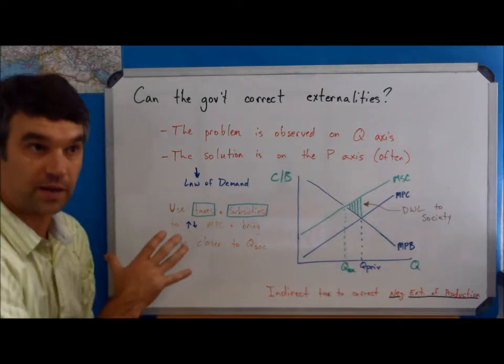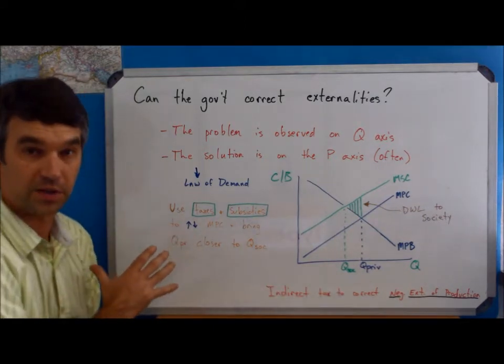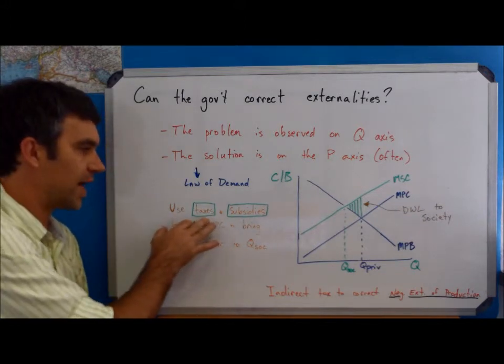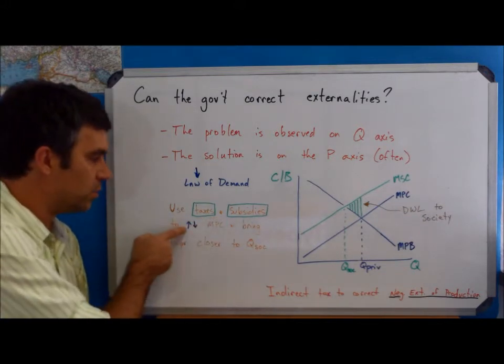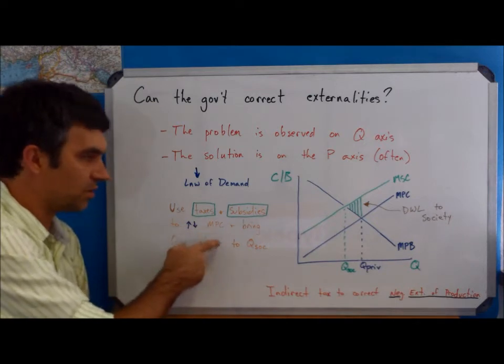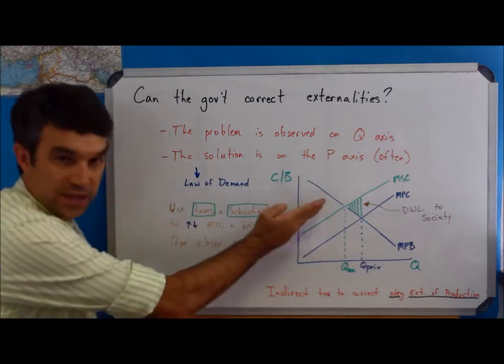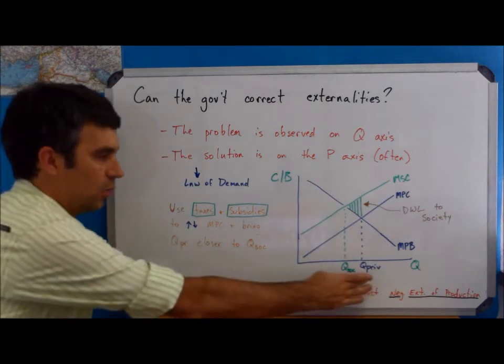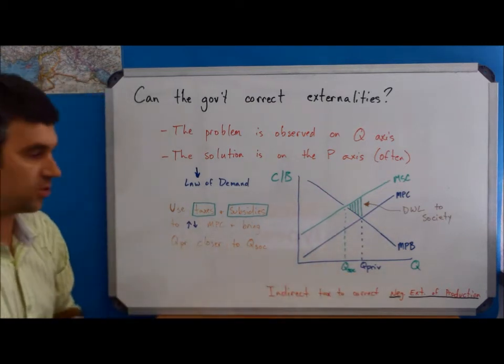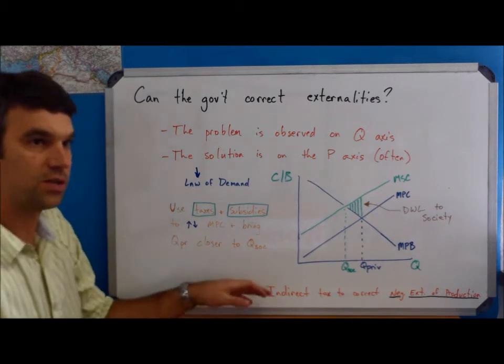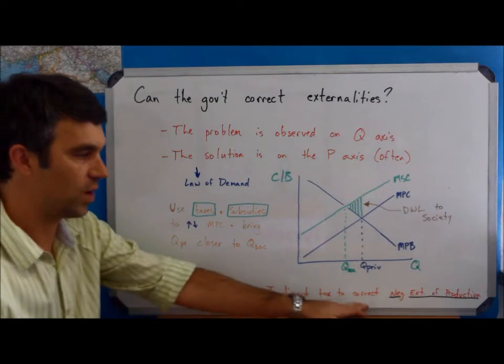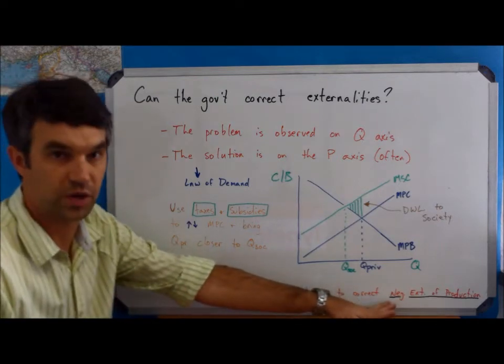Based on what we looked at the last part of the unit, government intervention, we said the government can use taxes and subsidies to move the MPC curve up or down, up with the tax and down with the subsidy. They can do that. And by doing so, we're going to bring those two quantities closer together. So this is going to be how we can use an indirect tax to correct a negative externality of production.